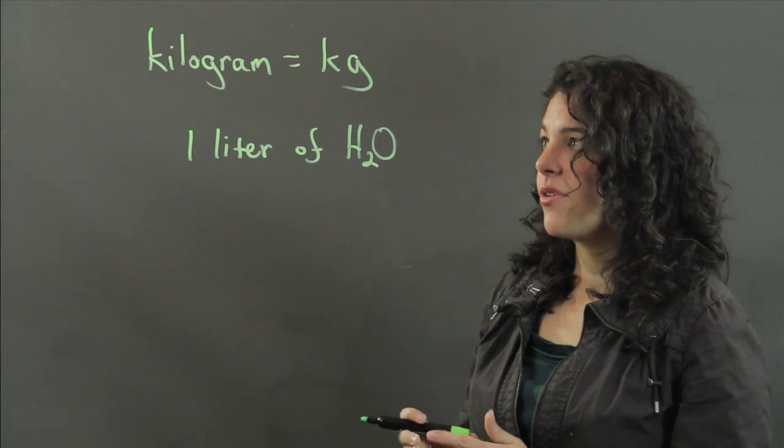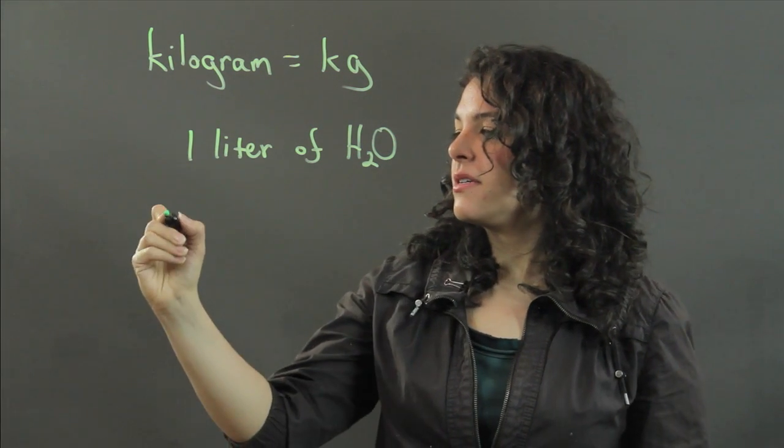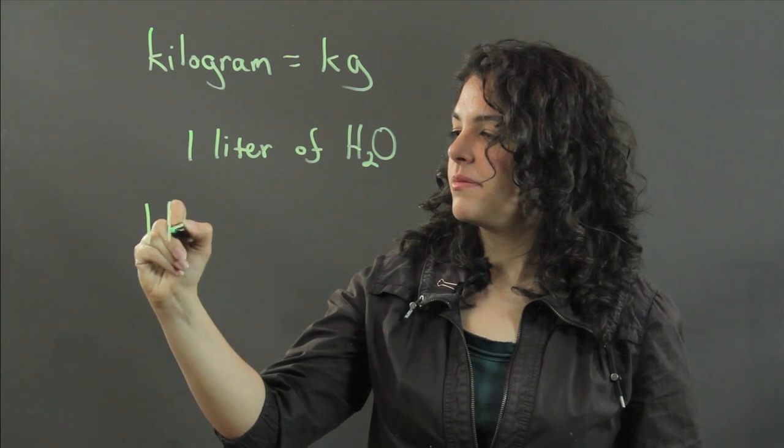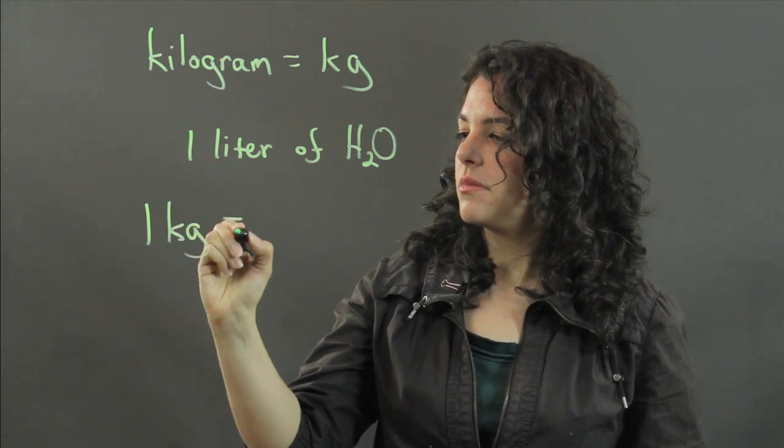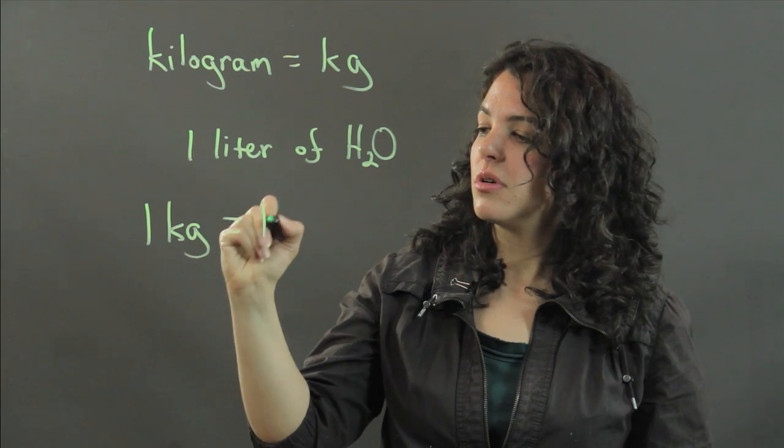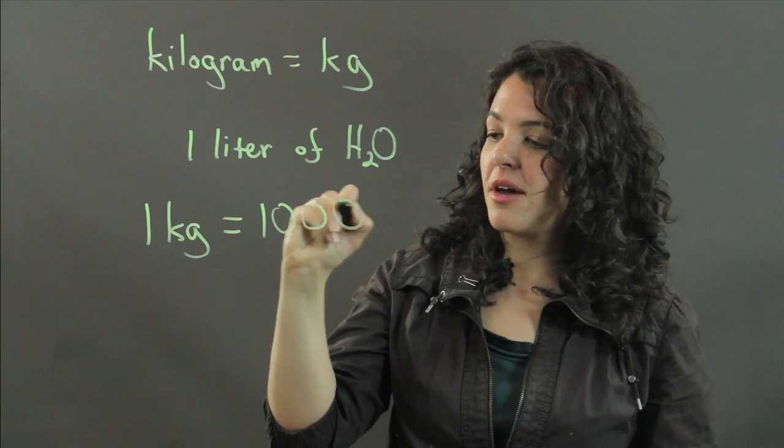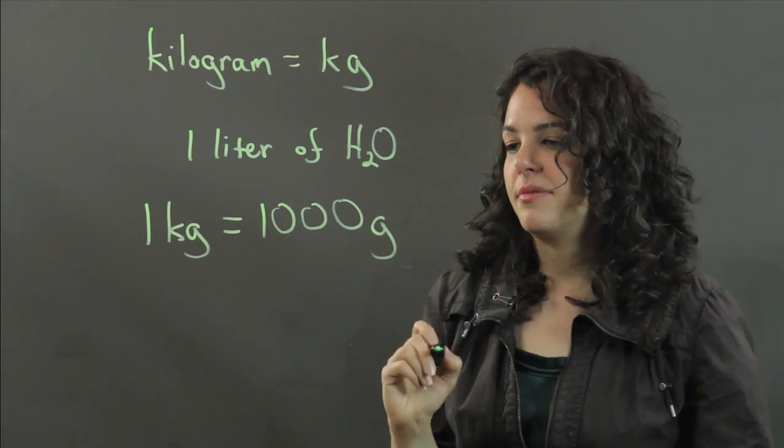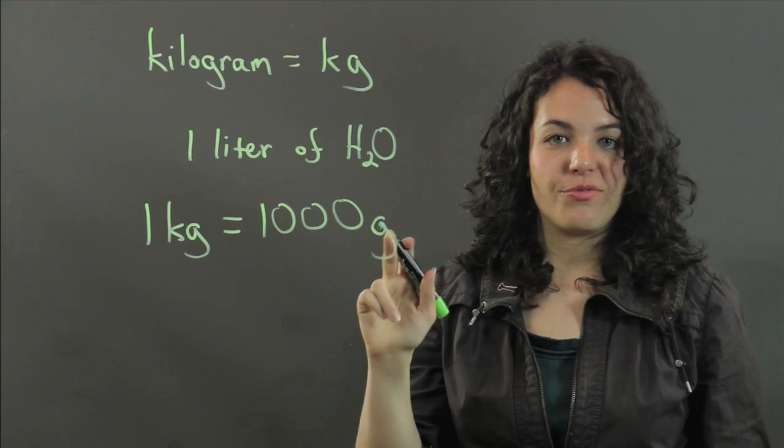The kilogram relates to grams like this: one kilogram is equal to 1,000 grams, G being the abbreviation for grams.